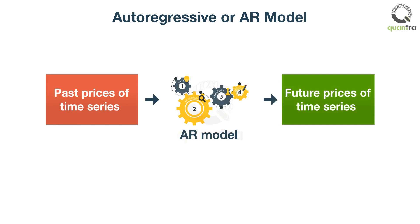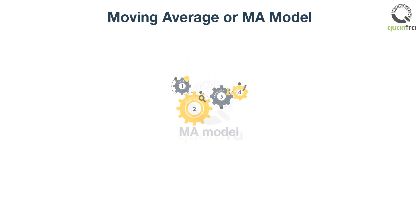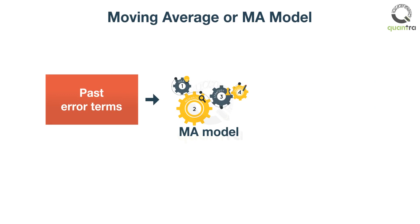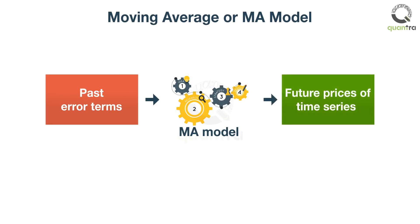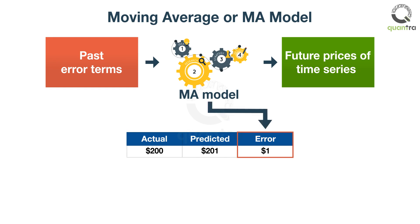The next forecasting model is the moving average model, or MA model. This model uses the past error terms in a time series for future forecasting. For example, stock Facebook's actual price was $200 and your model predicts $201, so there is an error of $1. The moving average model incorporates past error terms to predict the next day's price.